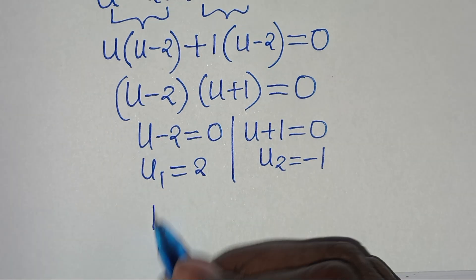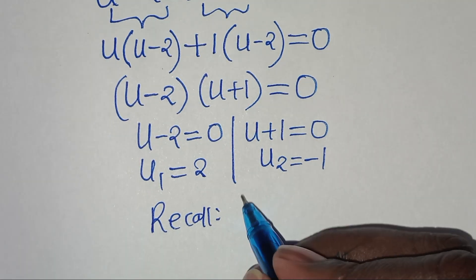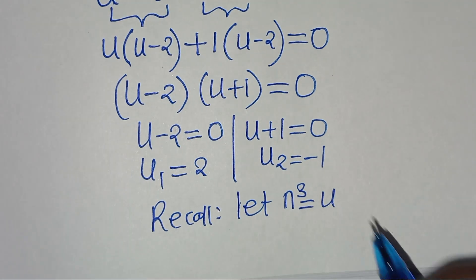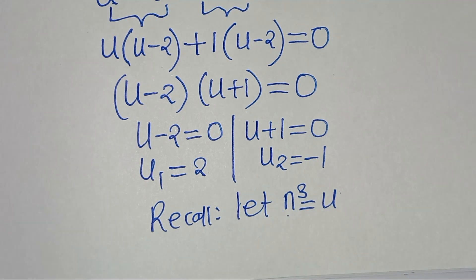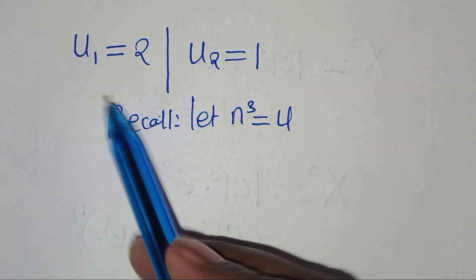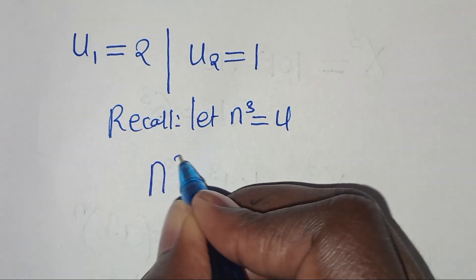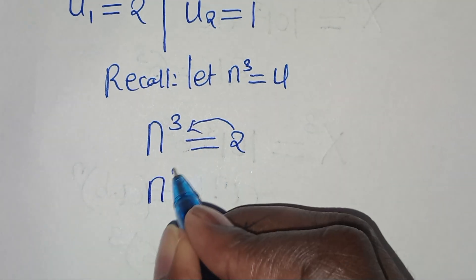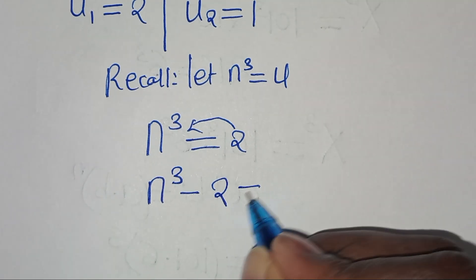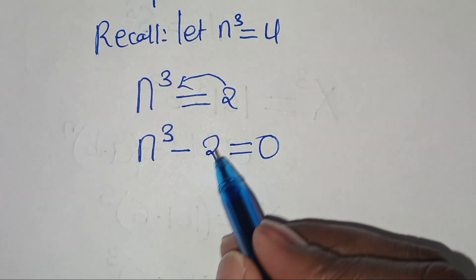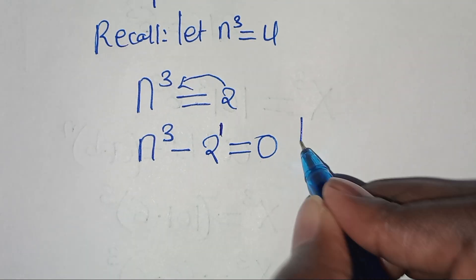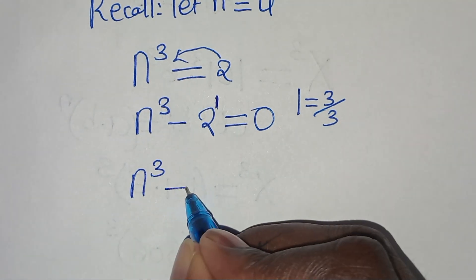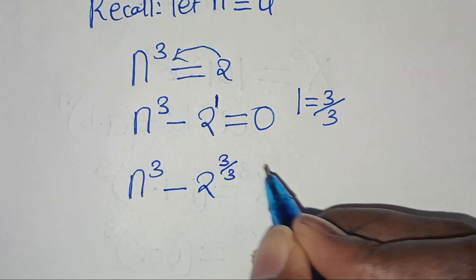If you recall, we let n to the power of 3 be equal to u. So let's substitute u with n to the power of 3. Starting with u₁ which is equal to 2, we have n to the power of 3 equals 2. Taking 2 to the left hand side, this is n to the power of 3 minus 2 equals 0. We can express 2 as 2 to the power of 1, and write 1 as 3 over 3, so this becomes n to the power of 3 minus 2 to the power of 3 over 3.